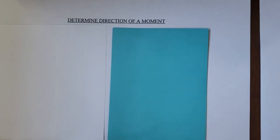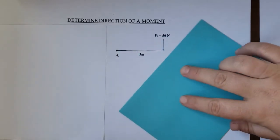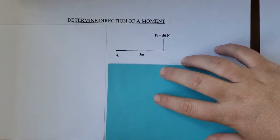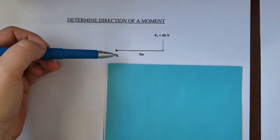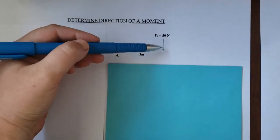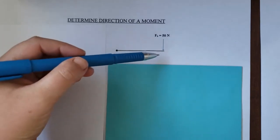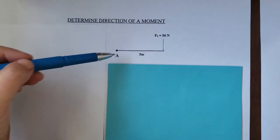I will start with one simple moment problem. Let's say we want to find the moment at point A with a force of 50 newtons acting on a distance of 5 meters from point A.